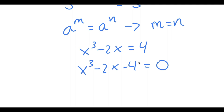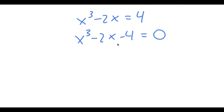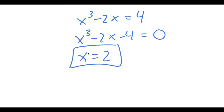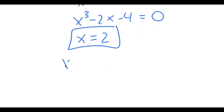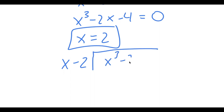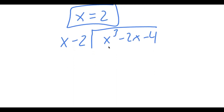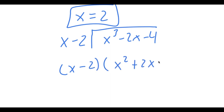To solve this, we need to find one solution first. Plugging in x equals 2, we get that the equation equals 0, so x equals 2 is one solution. Using this, we can find the rest of the solutions by doing long division: x cubed minus 2x minus 4 divided by x minus 2. Doing this gives us x minus 2 times x squared plus 2x plus 2.